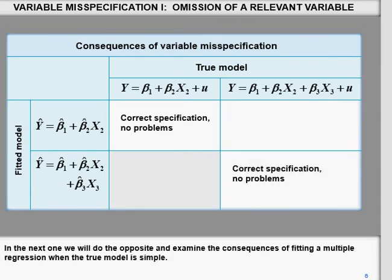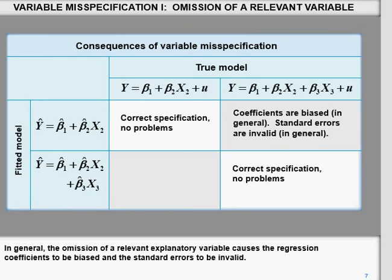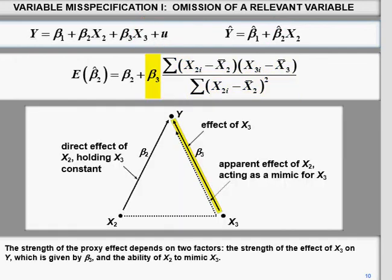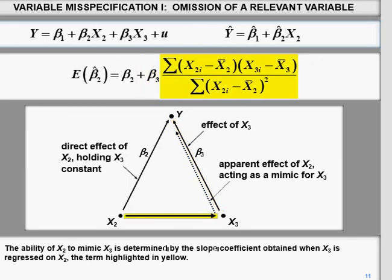In the case of omitting a relevant variable, you have biased coefficients. I have already discussed why these are biased and will discuss it again. Standard errors are also invalid. When you have not included x3, a term appears in the estimation. Beta 3 is the effect of x3 holding x2 constant, and the relationship between x3 and x2 is measured by the covariance between x3 and x2 divided by the variance of x2.